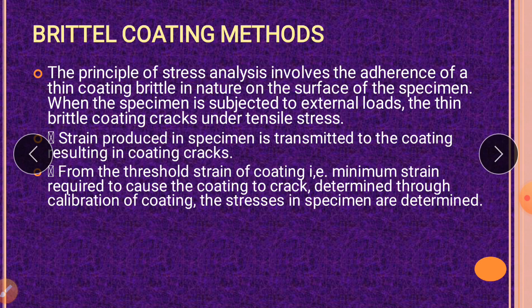The principle of stress analysis involves the adherence of a thin brittle coating on the surface of the specimen. When the specimen is subjected to external load, the thin brittle coating cracks under tensile stress. By applying a thin coating over the surface and then applying a tensile load, cracks appear. By analyzing those cracks we can understand what stress exists in the material, since the strain produced in the specimen is transmitted to the coating, resulting in coating cracks.